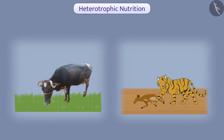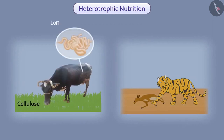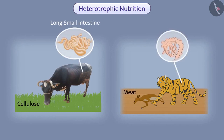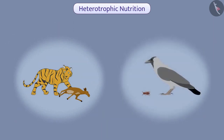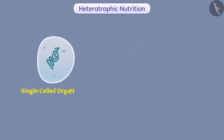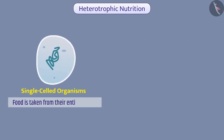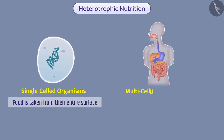For example, to digest herbivore food such as cellulose, organisms like cows have a long small intestine. Since the digestion of meat is simple, animals like tigers have a short small intestine. Some organisms get their nutrition from dead organisms, whereas some get their food from living organisms. In single-celled organisms, food is taken from their entire surface, while multicellular organisms have an advanced system.